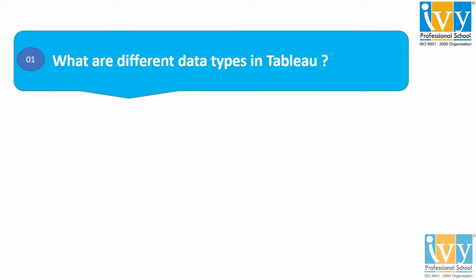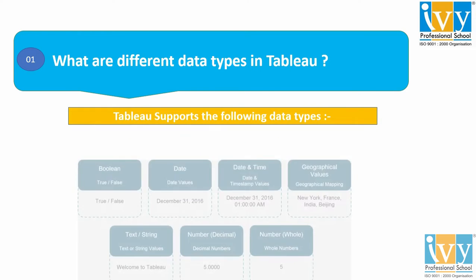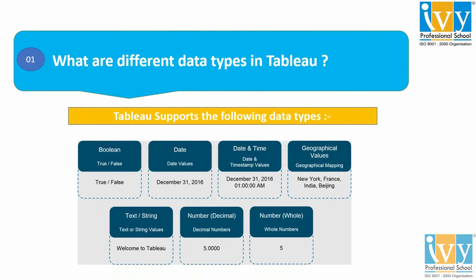What are the different data types in Tableau? So Tableau mainly supports seven data types. The first is the Boolean data type — that is, true and false values basically come under your Boolean data type.